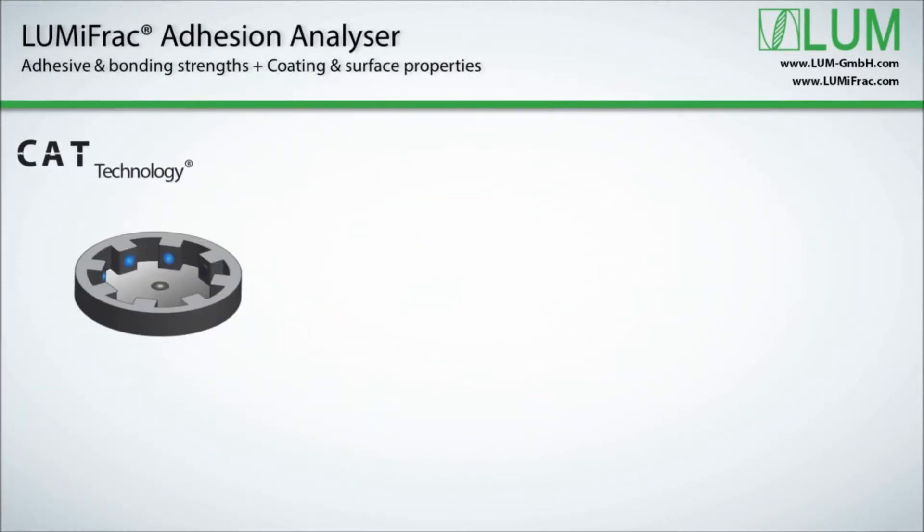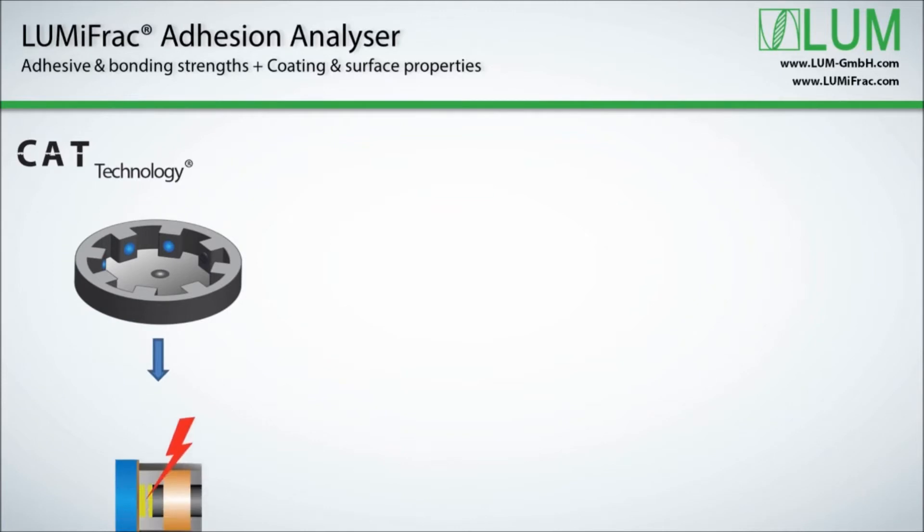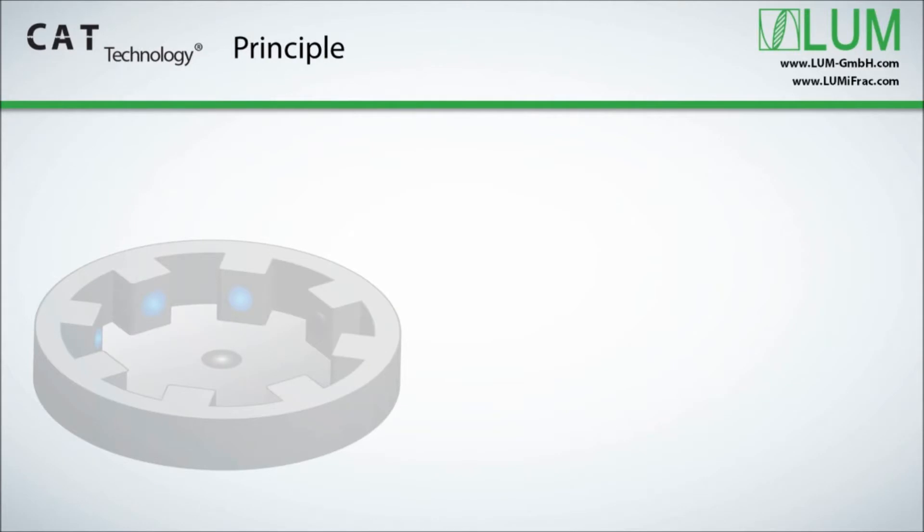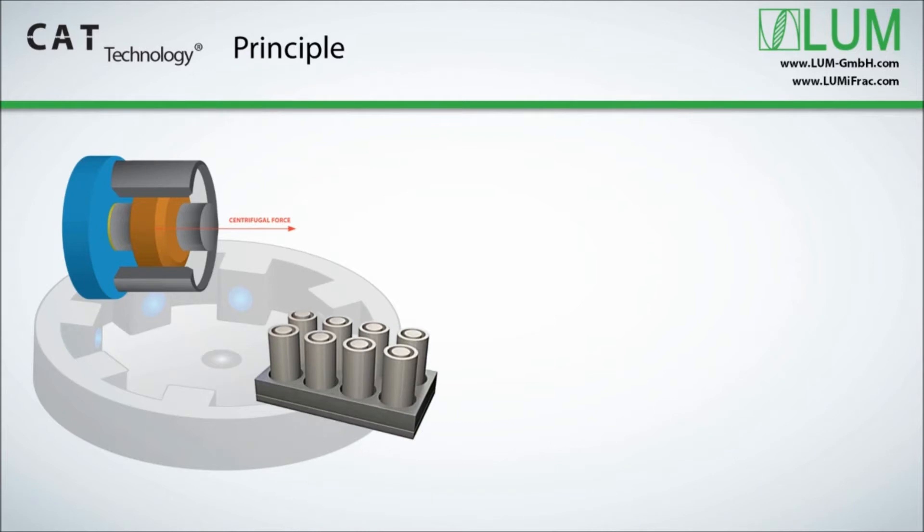We will give you a short introduction in CAT technology and sample preparation, present a selection of measurement results, and show you step-by-step how easily you can operate this analyzer. Our new multi-sample measurement principle CAT technology determines adhesive, bonding and composite strength by detecting automatically the critical failure load of up to 8 samples tested simultaneously.